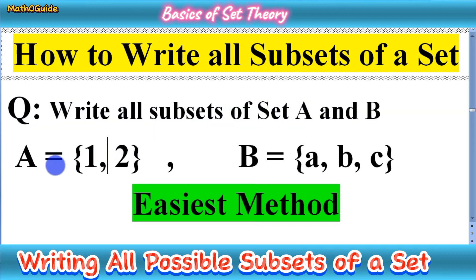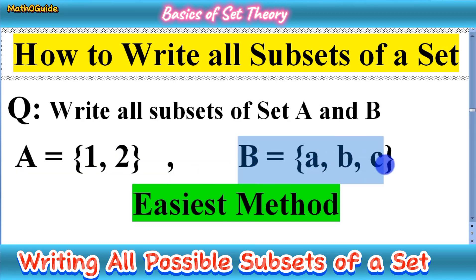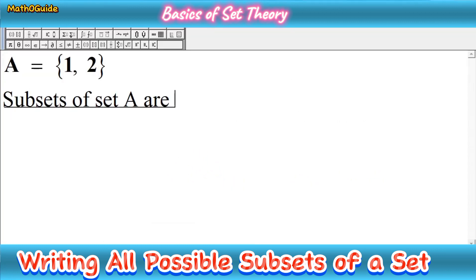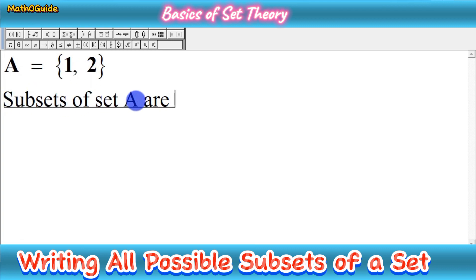We have been given two sets. The first set is set A, which has two elements, and the second set is set B, which has three elements. Let's start with how to write the subsets of a given set. First, we write set A with its two elements, one and two, and we will write all subsets of this set.